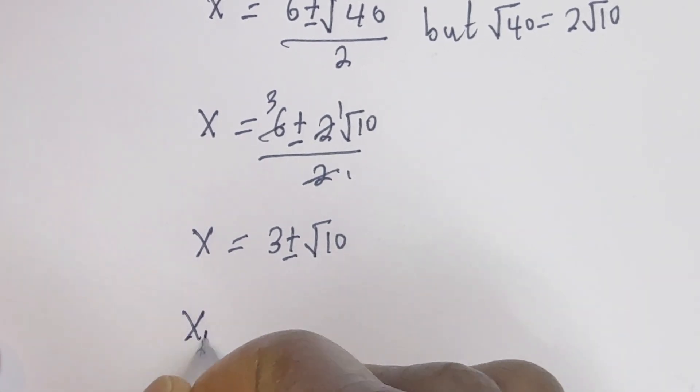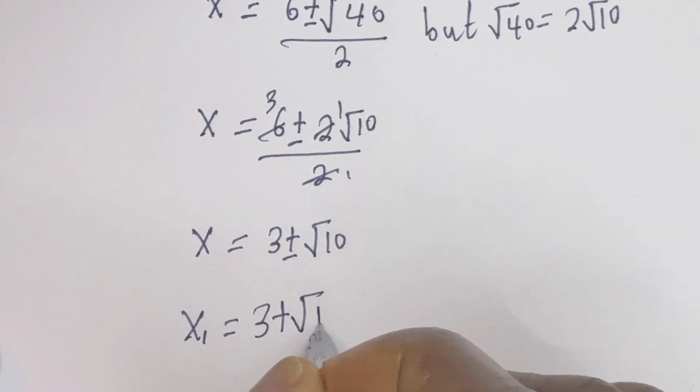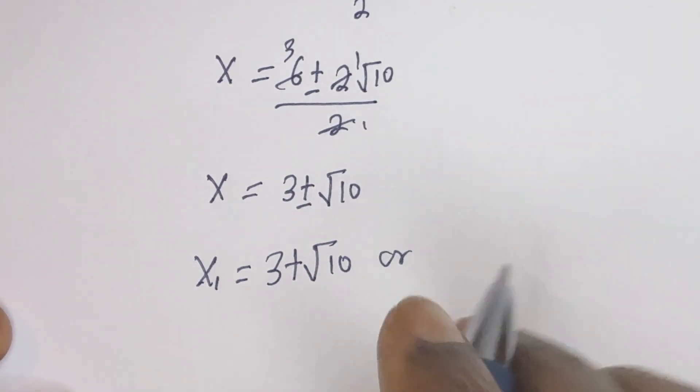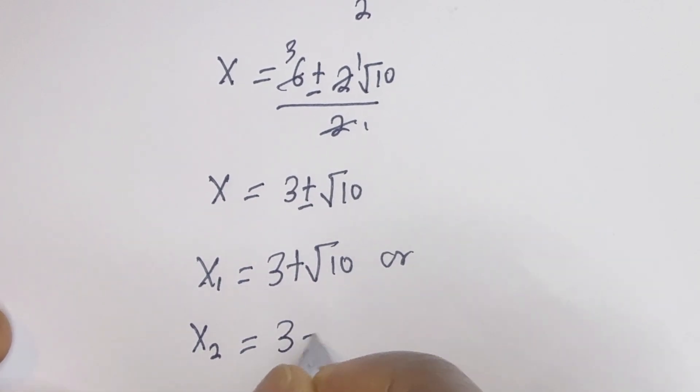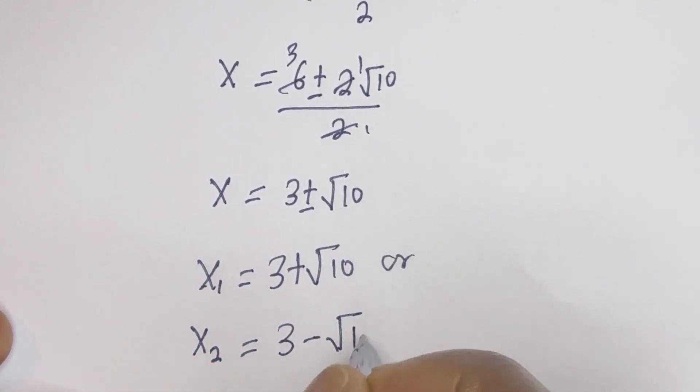Then x1 is equal to 3 plus square root of 10, or x2 is equal to 3 minus root of 10.